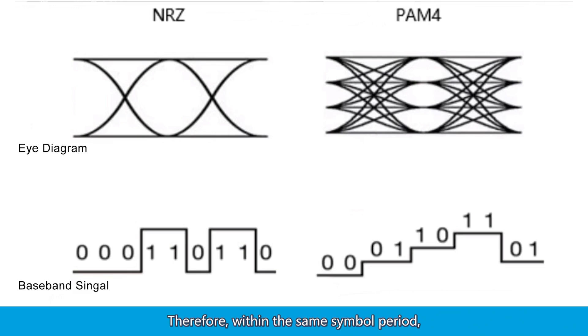Therefore, within the same symbol period, PAM-4 signals achieve twice the bitrate of NRZ signals, improving transmission efficiency.